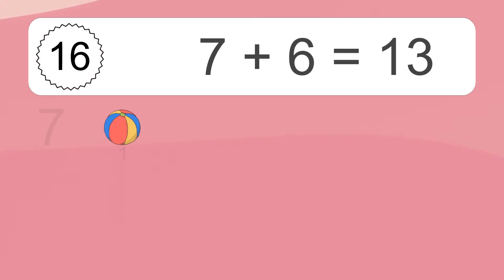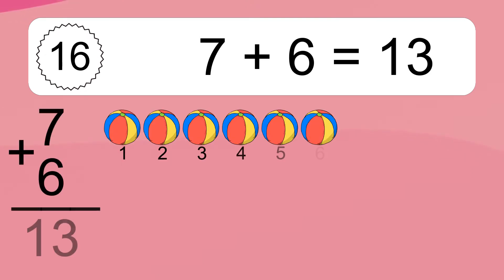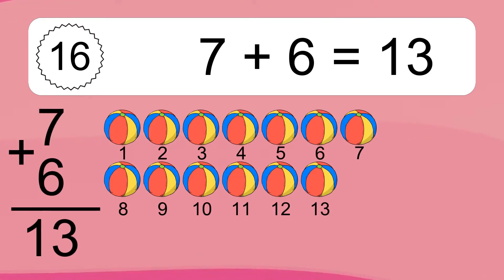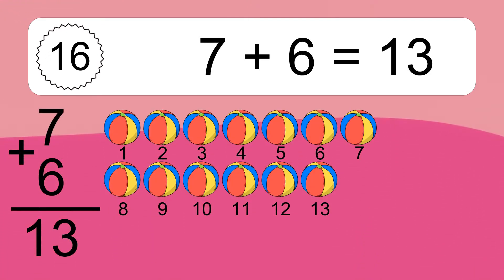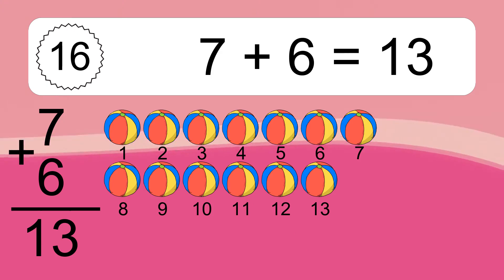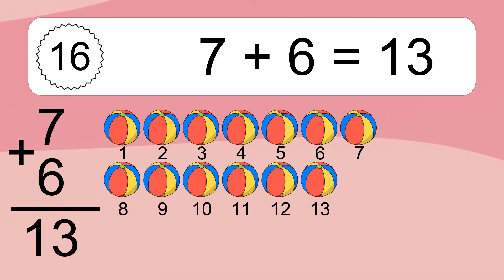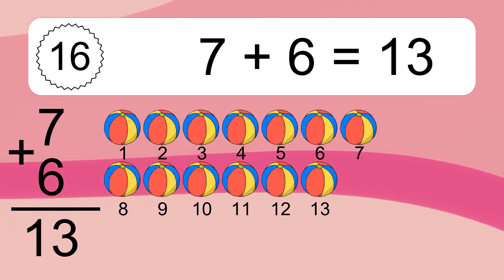7 plus 6 equals 13. Let's count it. 1, 2, 3, 4, 5, 6, 7, 8, 9, 10, 11, 12, 13.